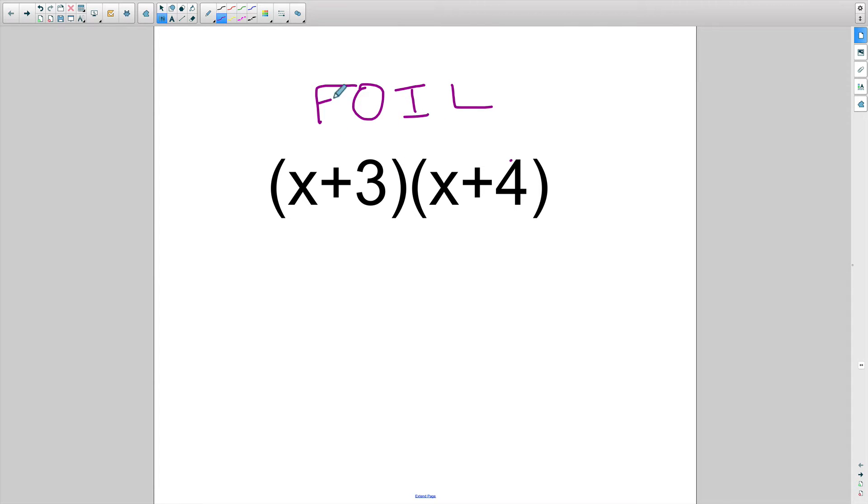We say FOIL because it means first, outer, inner, last. And basically what you're going to be doing is distributing this first quantity to this next quantity. And the way we do it is we distribute each of these integers.